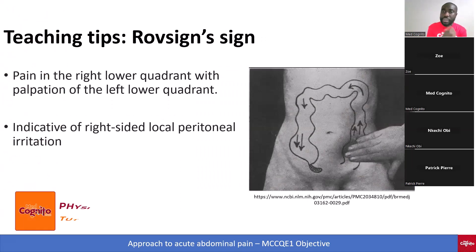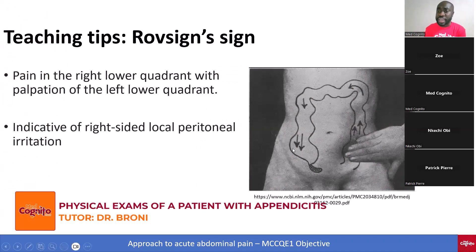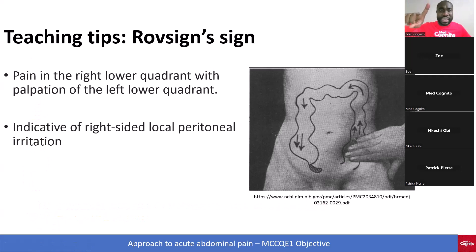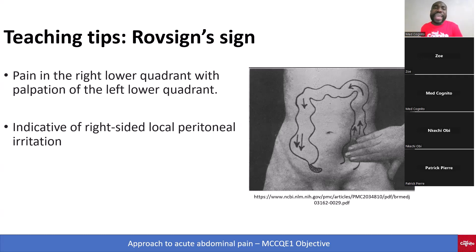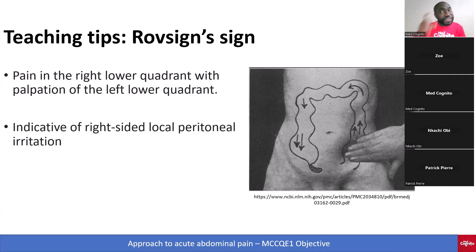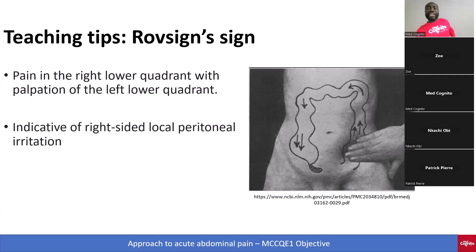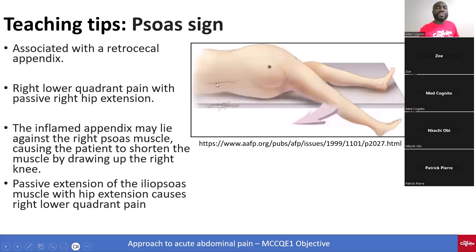Rovsing's sign: the appendix is on the right, but you press on the left side. What happens is that it transmits pressure through the intestines, causing pain in the right lower quadrant with palpation of the left lower quadrant. That is Rovsing's sign. It is indicative of right-sided local peritoneal irritation. So: McBurney's point tenderness is on the right; Rovsing's sign is elicited from the left.